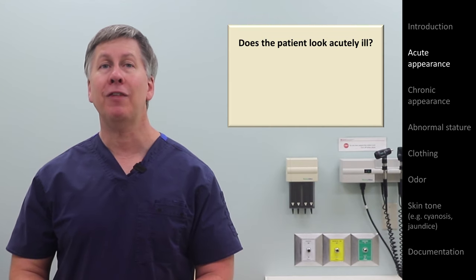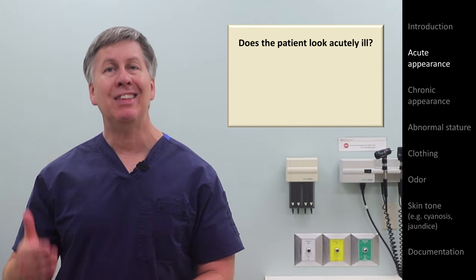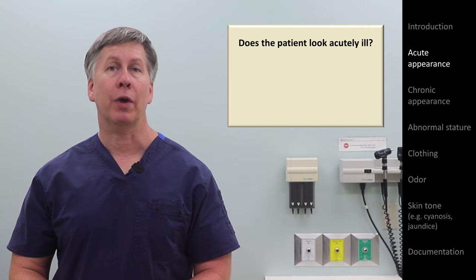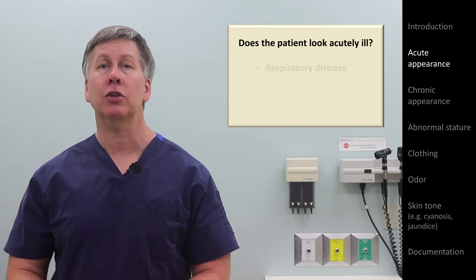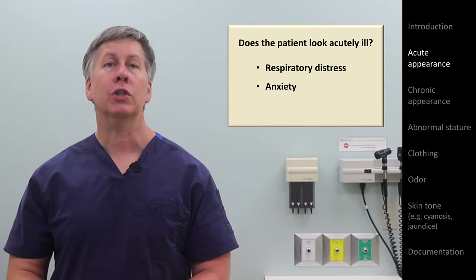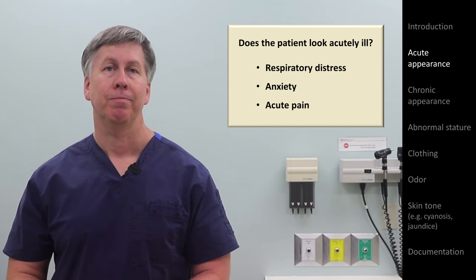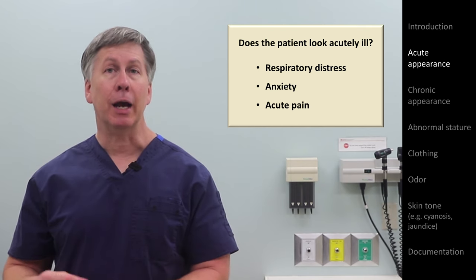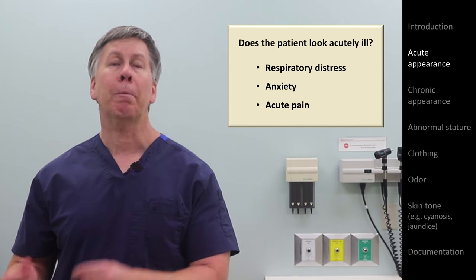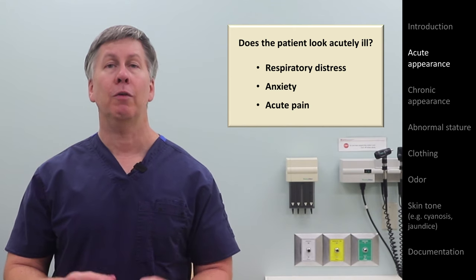So what does belong within general appearance? First is whether or not the patient appears acutely ill, and if they do, what appears to be driving it in the most general sense possible. For example, you might state or write the patient appears acutely ill secondary to respiratory distress, or secondary to extreme anxiety, or secondary to abdominal pain. This specific assessment is not based on their reported symptoms, but rather based on your completely subjective sense from visually observing them.